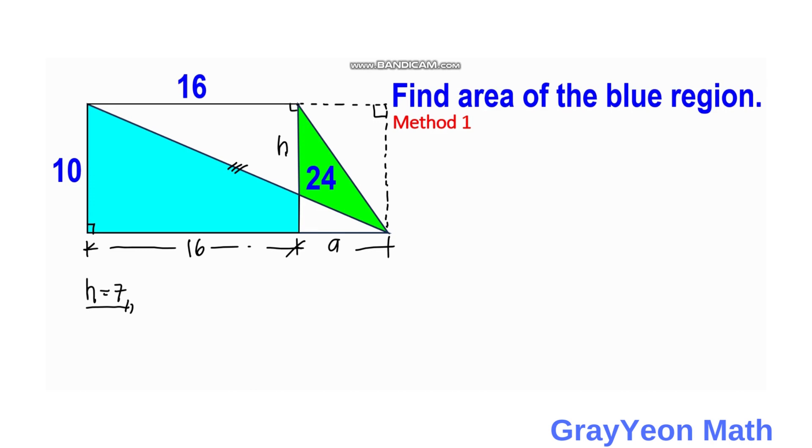So having H as 7, then this becomes simply 10 minus 7, and this becomes 3. So if that is 3, then we can use the area formula for a trapezoid for this blue region.